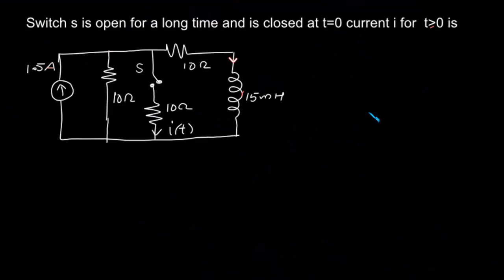The switch s is open for a long time and is closed at t equal to 0. We are asked to find out what is the current i of t for time greater than or equal to 0.